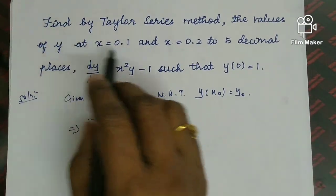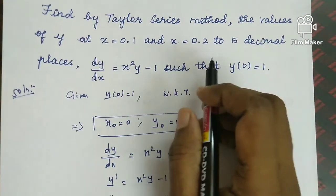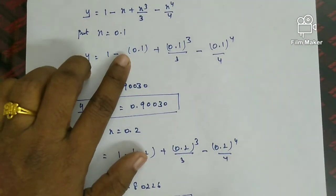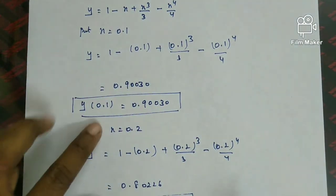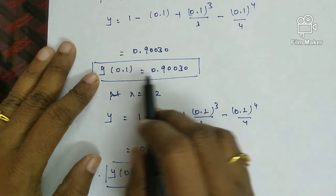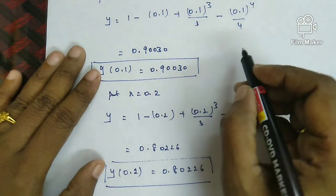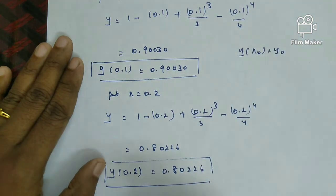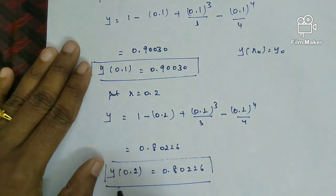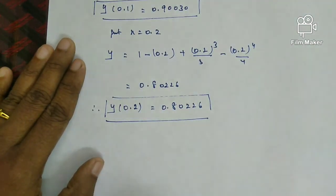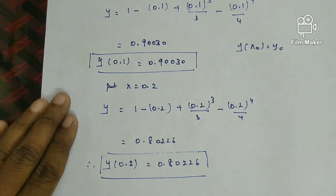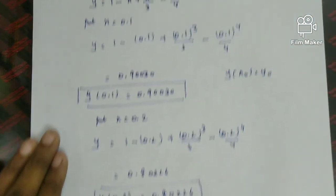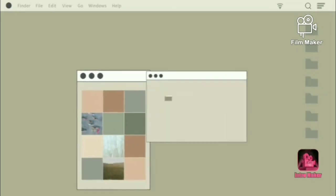In this question, there are two points to find. Reading the question, the points are 0.1 and 0.2, so we compute y of 0.1 and y of 0.2. The solution gives y of 0.1 and y of 0.2 to 5 decimal places. This concludes the sum under Taylor series method. Thank you for watching.